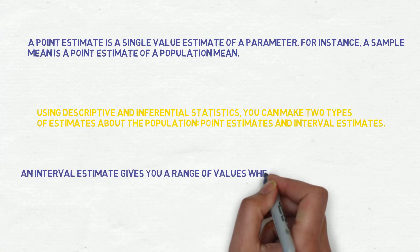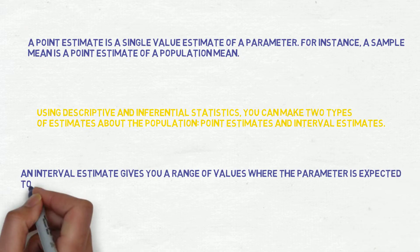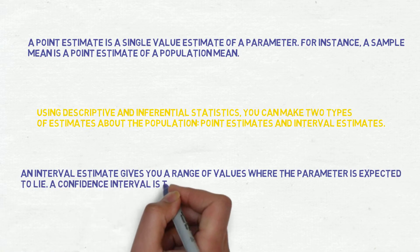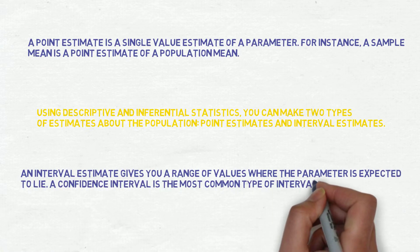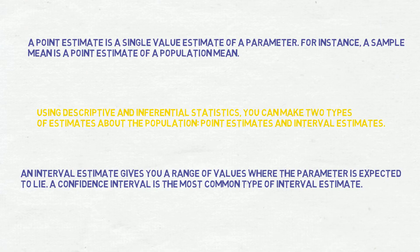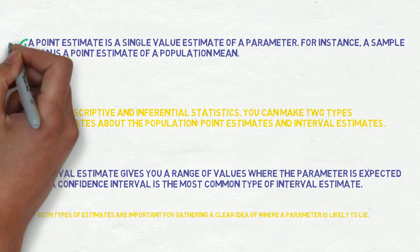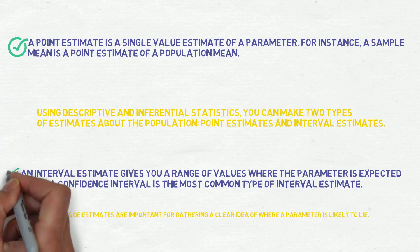An interval estimate gives you a range of values where the parameter is expected to lie. A confidence interval is the most common type of interval estimate. Both types of estimates are important for gathering a clear idea of where a parameter is likely to lie.